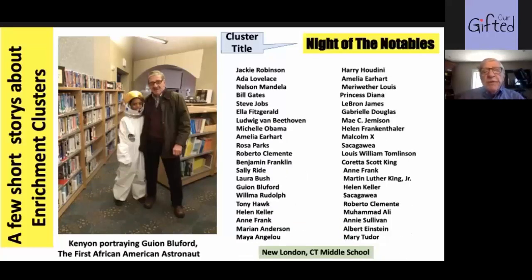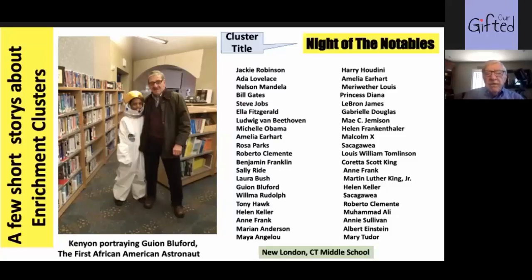This cluster was done twice, and these were the famous people the kids chose — they did marvelous research, reading biographies, autobiographies in some cases, and looking at things on the internet about the lives of these people. You see all kinds of people: Coretta Scott King, Roberto Clemente, Guion Bluford, Helen Keller, Anne Frank — it goes on and on. If you ever visited that Night of the Notables, you would see so much excitement.